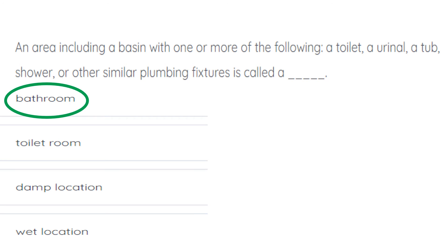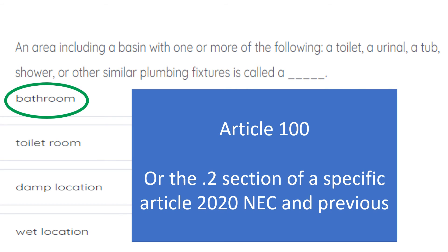This seems like a simple question, but on your exam you're likely to have one or two definition questions. For those, you've got to read the play — when it makes a blanket statement like this, is it giving a definition and wanting you to look it up? Head to Article 100 and use your four possible choices to reverse look it up. Start with bathroom, then toilet room, then damp location and wet location. If none match, you can also head to the .2 section of a specific article — for example, 680.2 for pools. Note: that only works in the 2020 code cycle and previous, because in 2023 and later they have relocated all definitions back to Article 100.